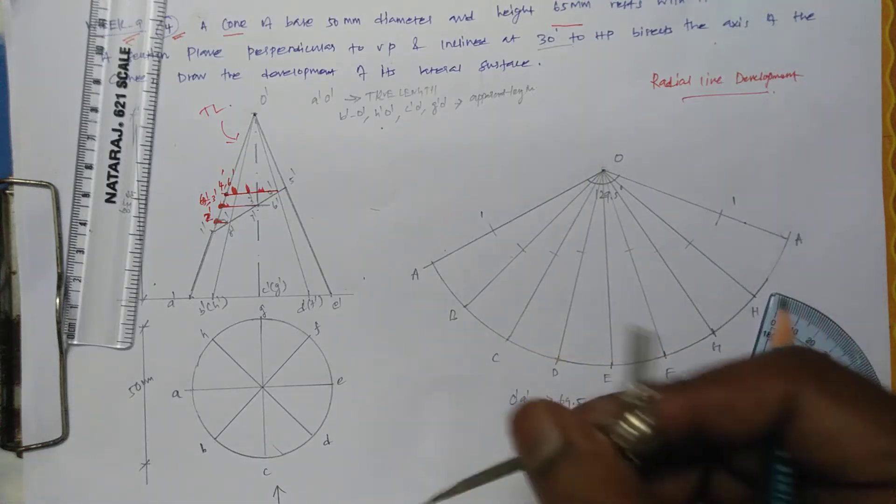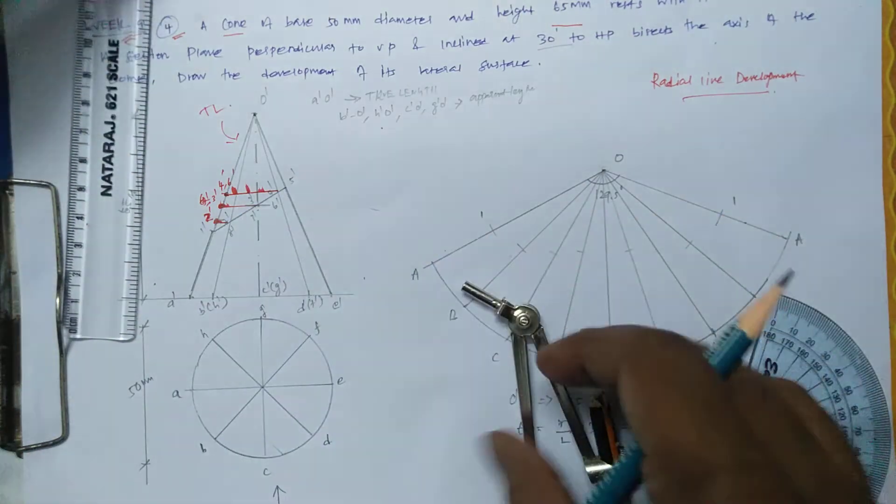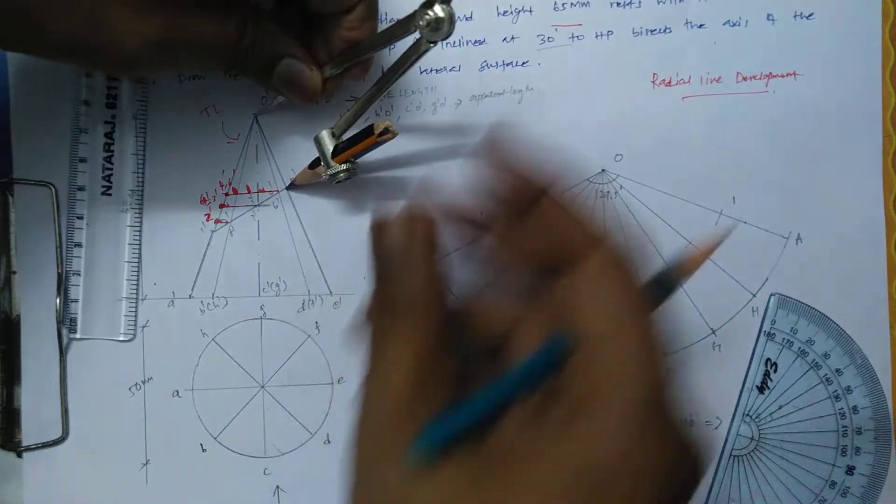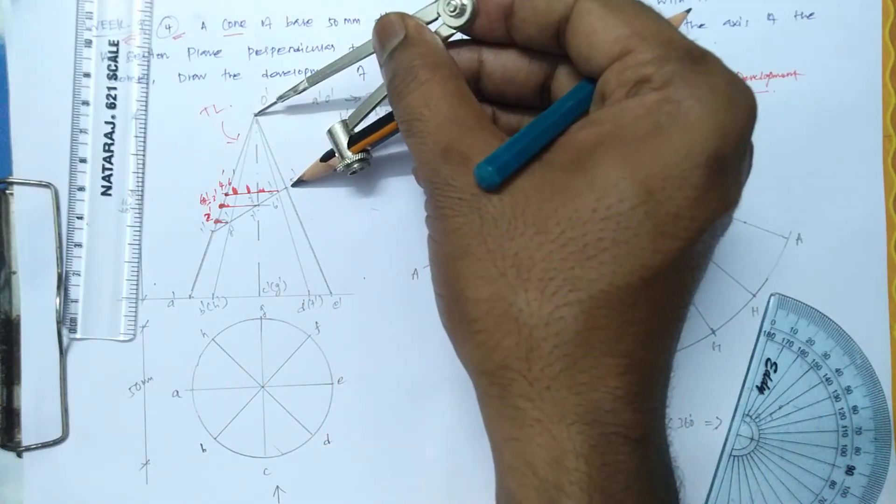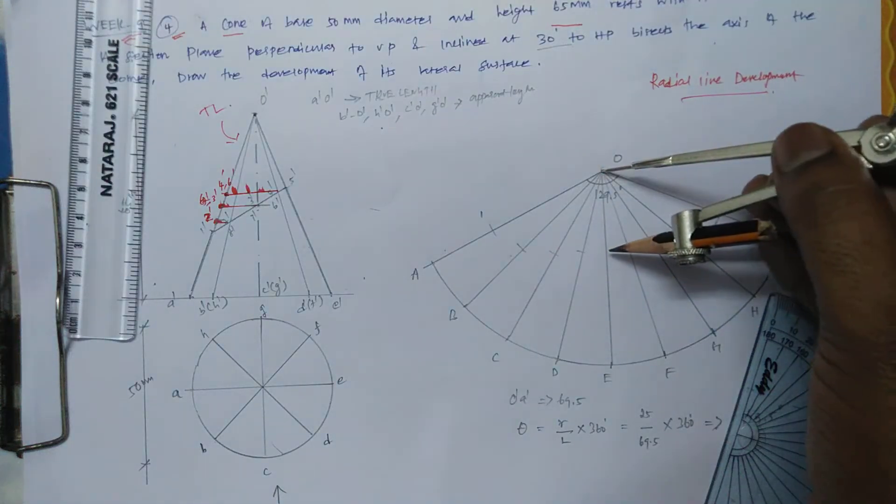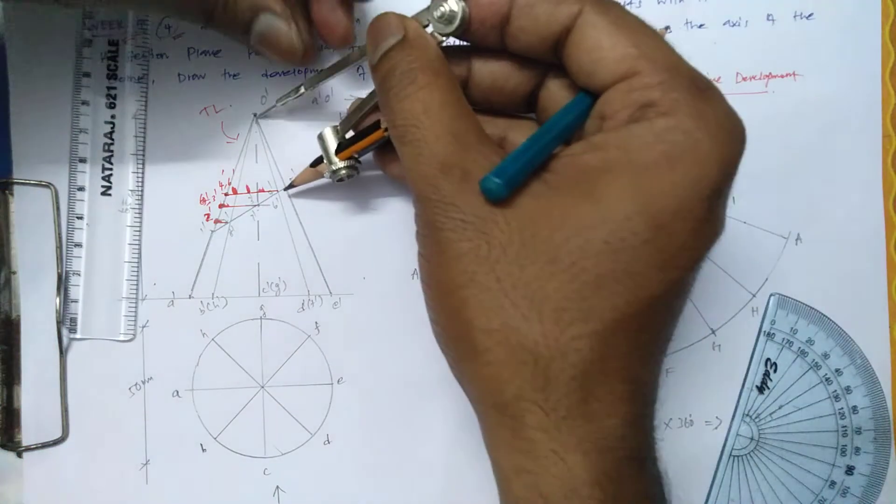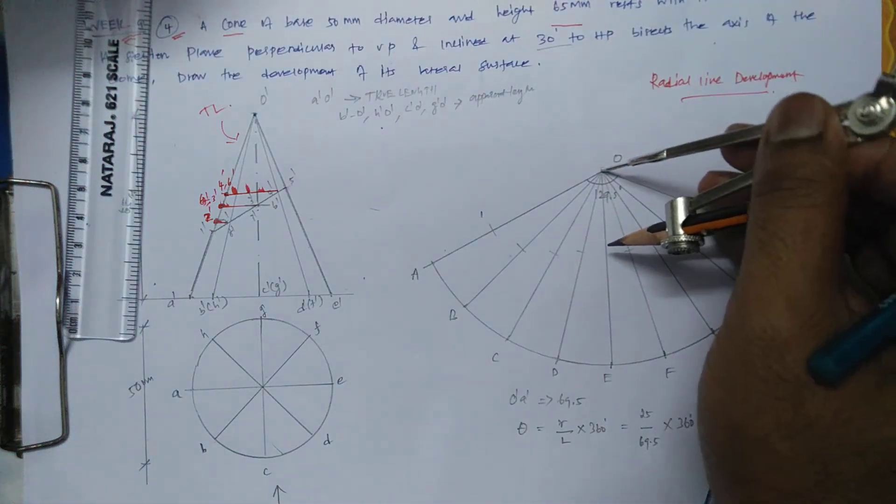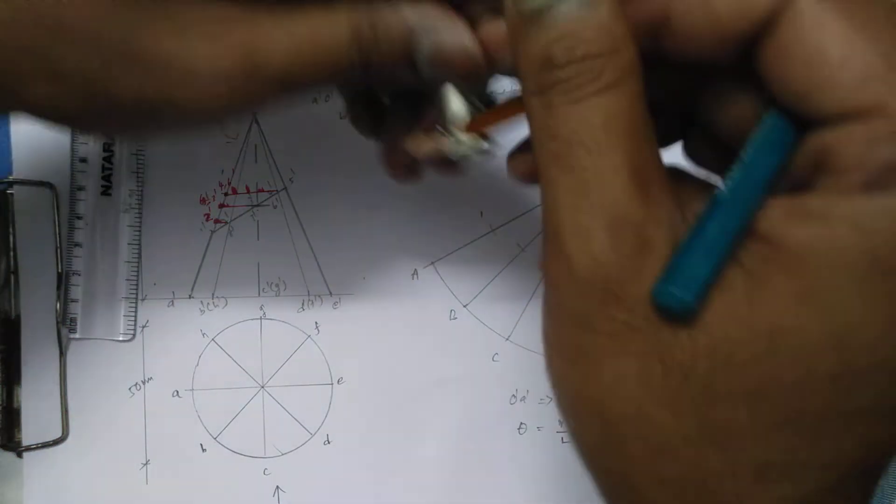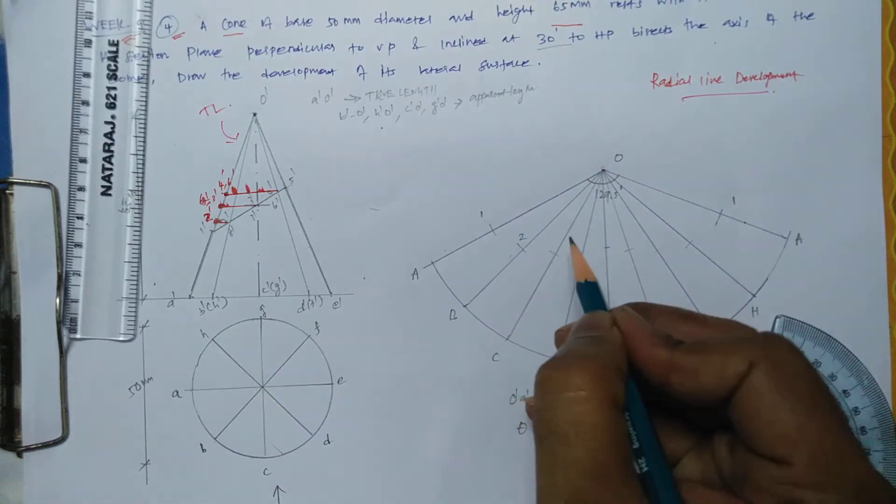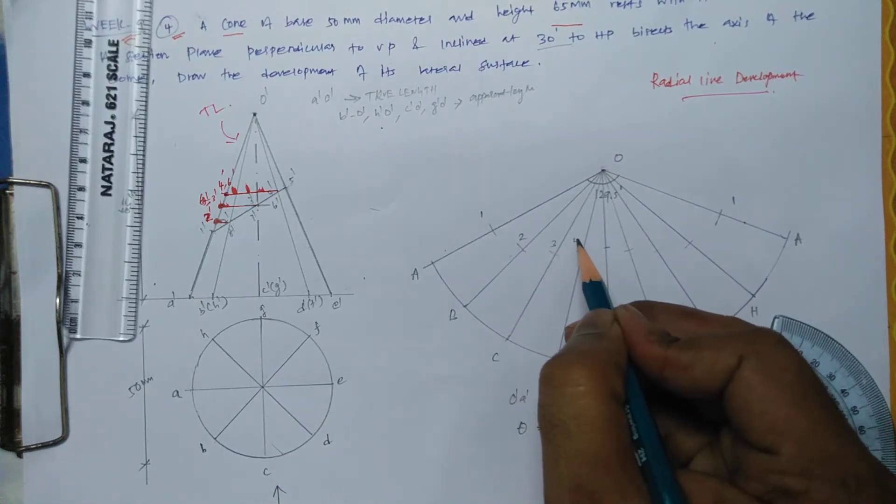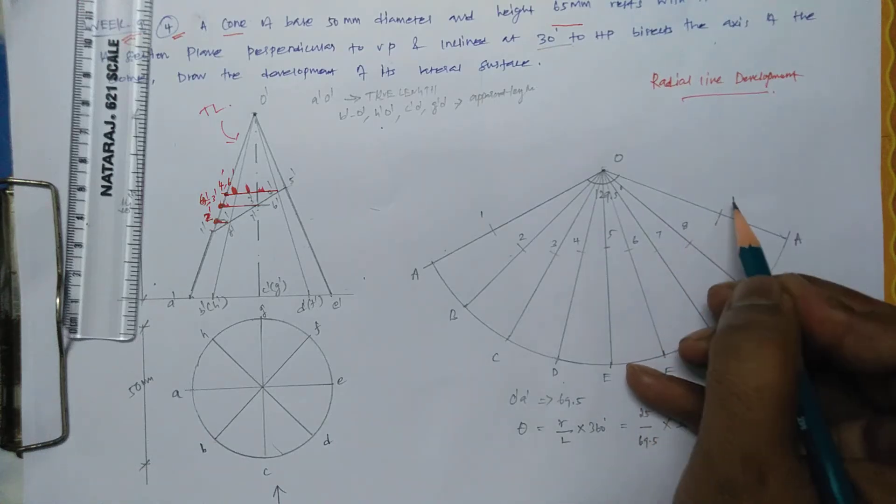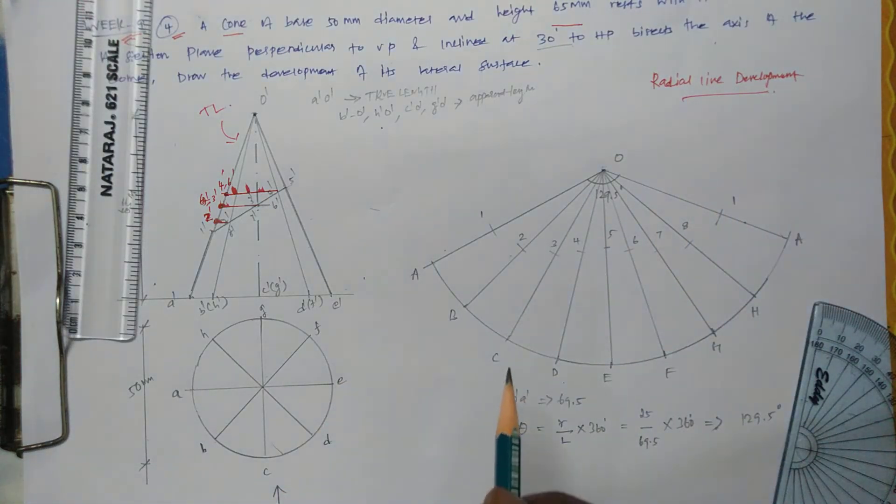Now what about 5? Point 5 is here directly - you can measure because it is in the true length. This is 1, 2, 3, 4, 5, 6, 7, 8, again 1. Just connect by a smooth curve.